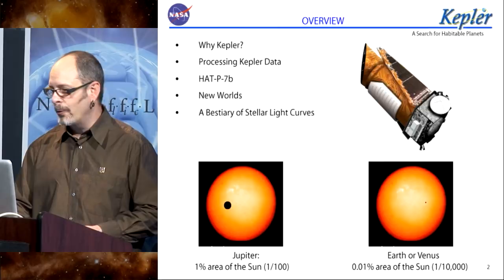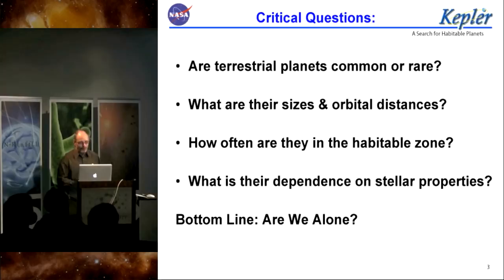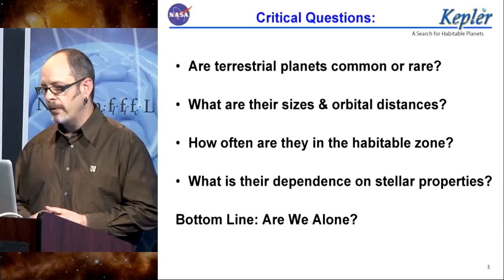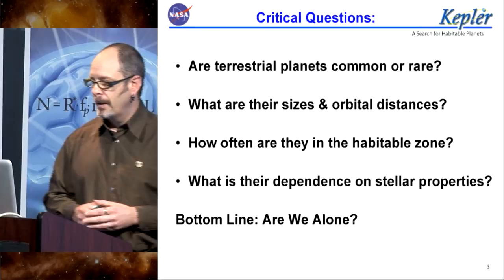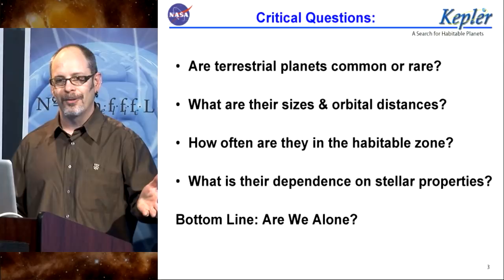That's challenging for a whole host of reasons. But the critical questions that Kepler is poised to answer are whether terrestrial planets are common or rare, what their sizes and orbital distances from their star are, and how often we find these in the habitable zone — that range of distances for which you could find liquid water pooling on the surface. Furthermore, what is their dependence on stellar properties? We don't look simply at solar analogs, twins of the Sun. We look at a full spectrum of main-sequence stars, from small M stars about half the size and mass of the Sun, through to late A stars about twice the size of the Sun. So we're interested in what kinds of stars have planets, and what kinds of stars have habitable planets.